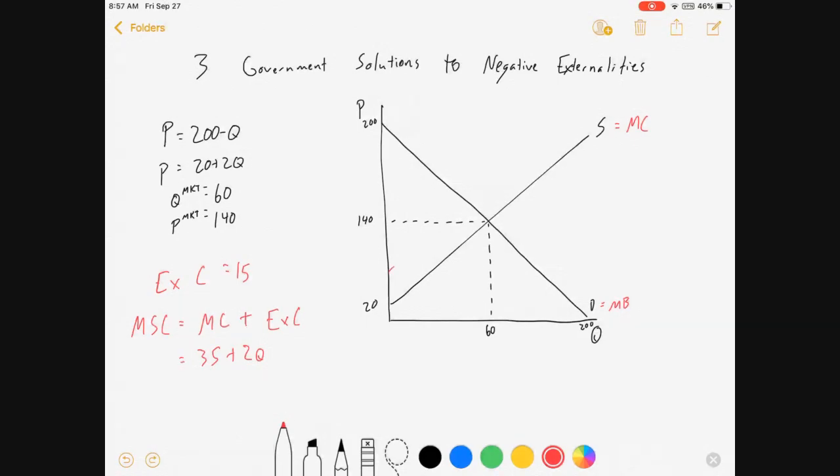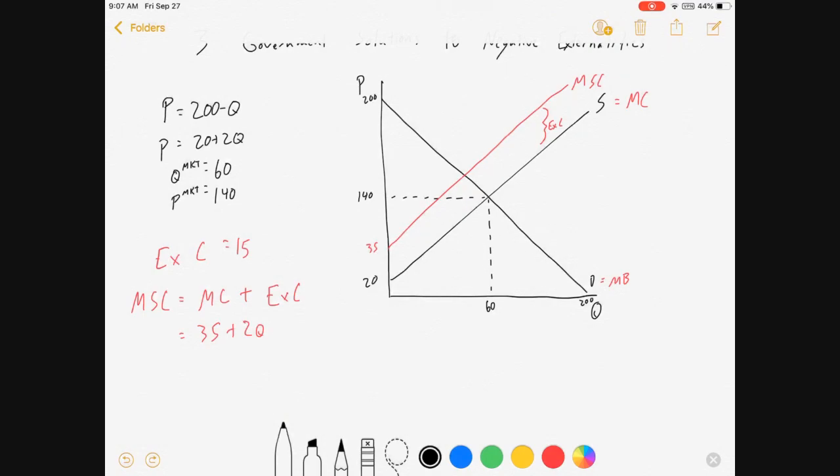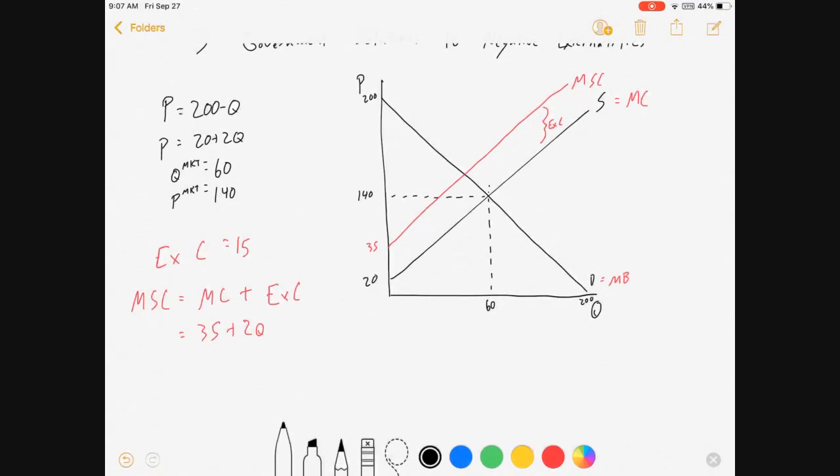So what's that look like on this graph? Well, I've got this marginal social cost line, and the gap between them is the external cost. Let's see, we've got a 35 here. Now, one thing you'll notice is that at our market equilibrium now, the costs to society are greater than the benefits.